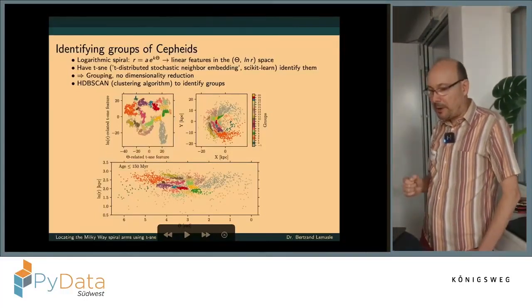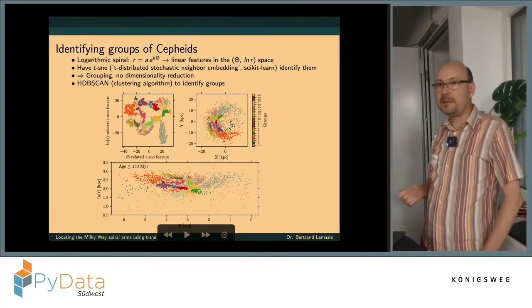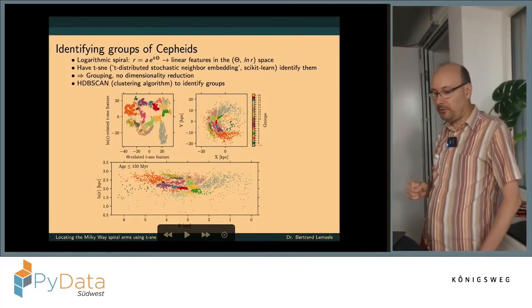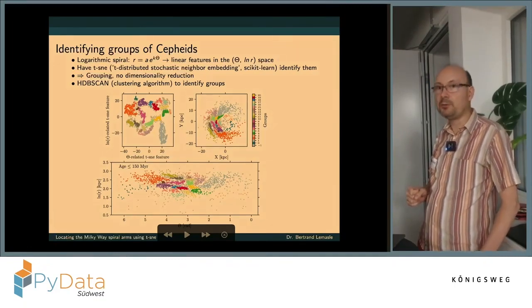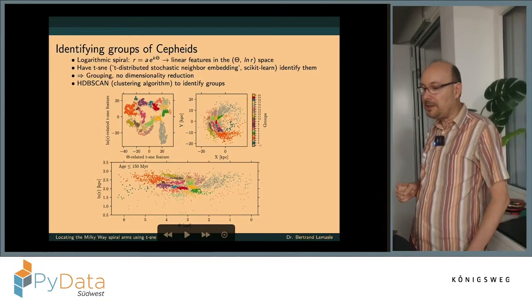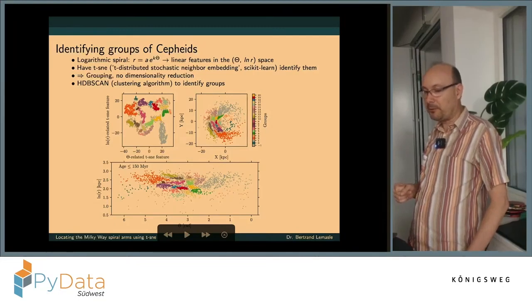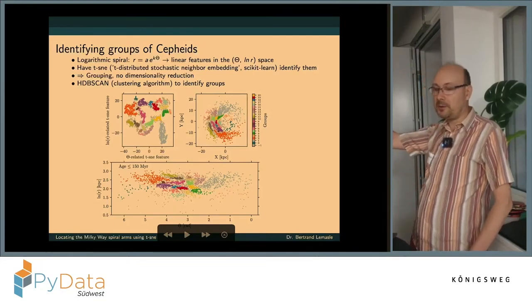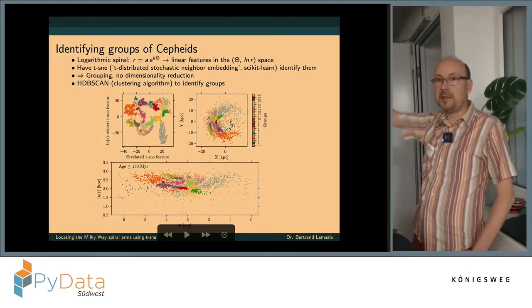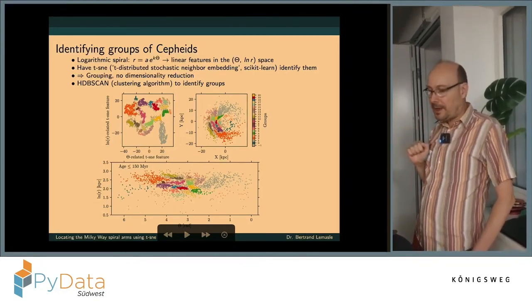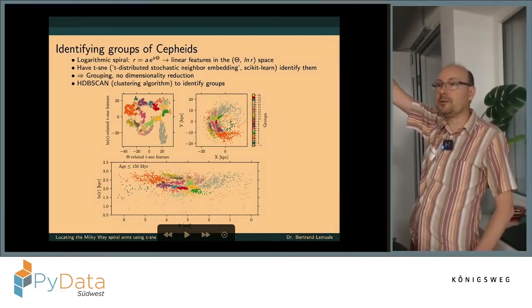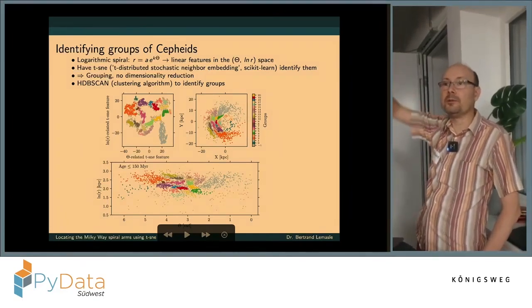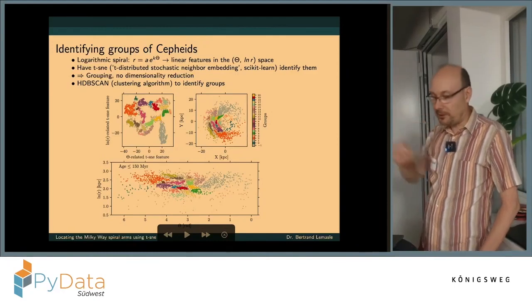So if we talk about spirals, we start with the logarithmic spiral. And if you try to make it a bit easier, you go in a slightly different space where you expect to have linear features in the theta and logarithm of radius space, where radius here, or r, is a distance from the galactic center, and theta is just the angle. You start somewhere, you have a reference, and you turn around the Milky Way, and then you define an angle that way.